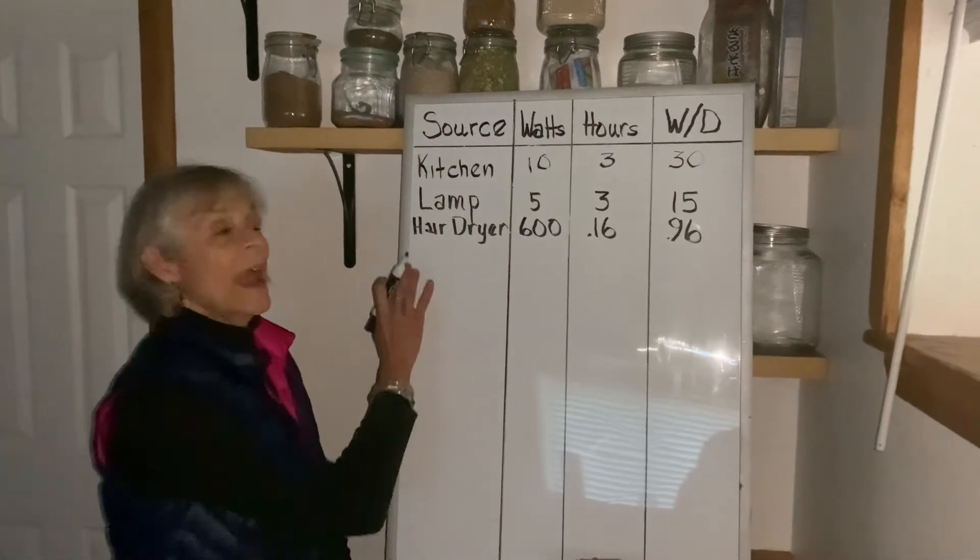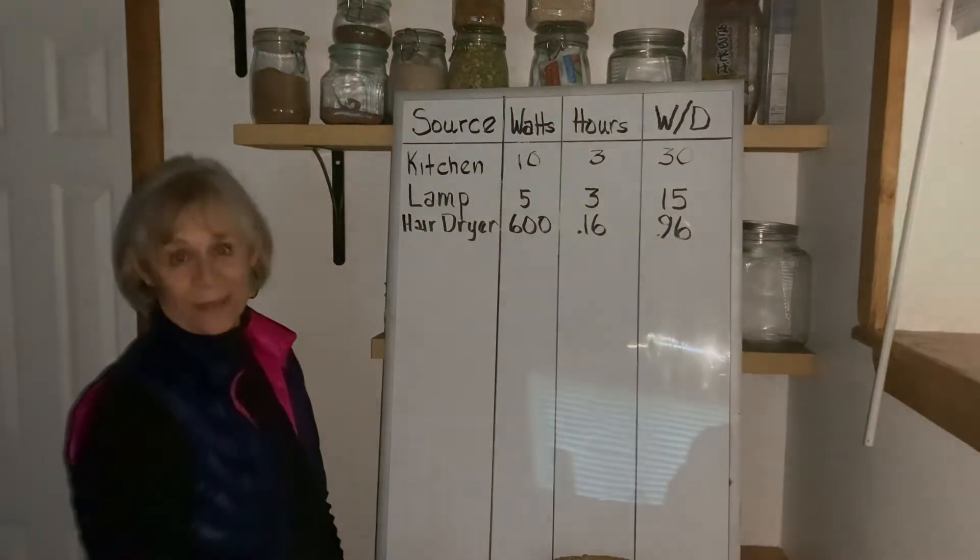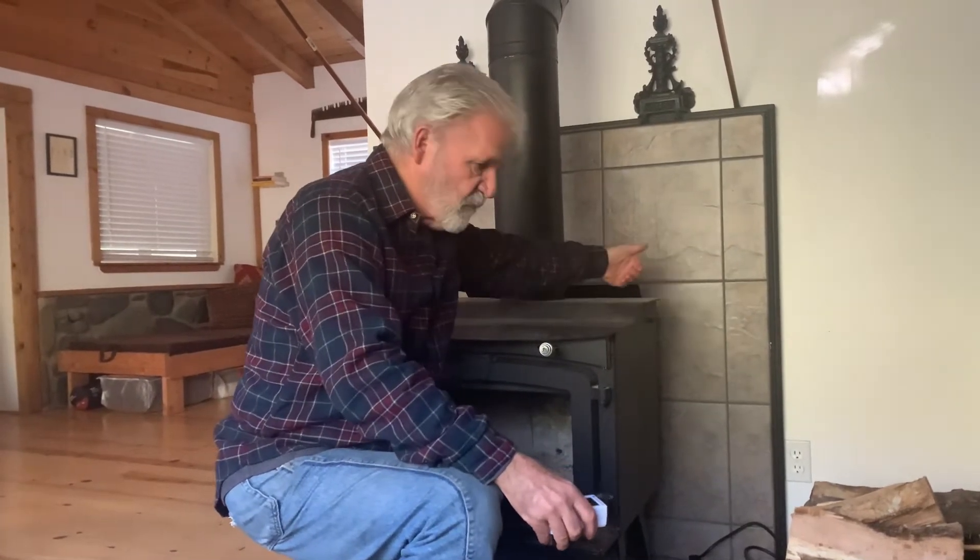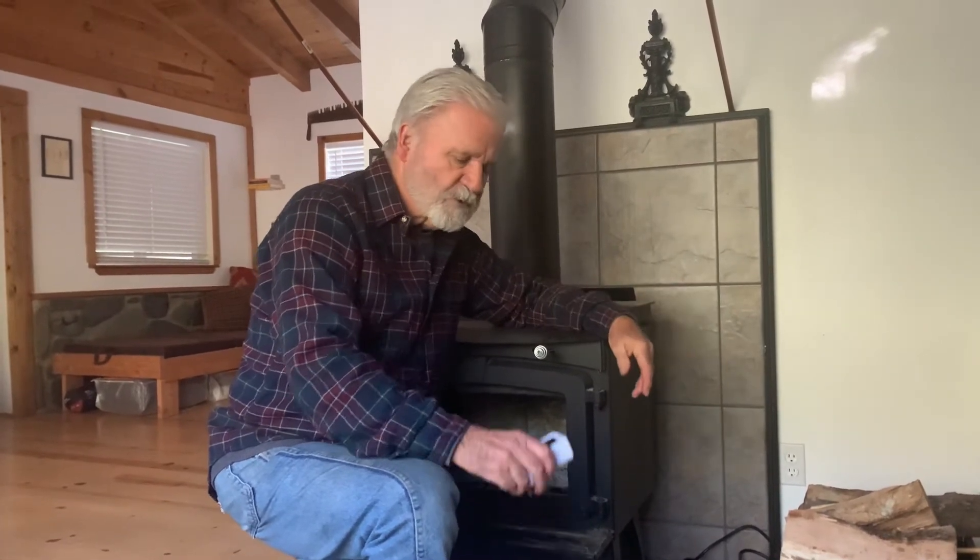Go through your house and do this with each of your appliances. Now some appliances can be hard to get to for their wattage readings. This wood stove, for example, has a blower on the back of it, but I can't contort myself around and read the plate on the back. So there's a solution — it's this. This is called a plug-in watt meter.